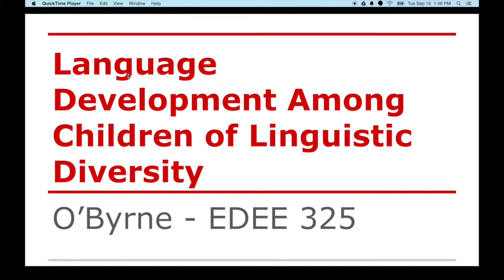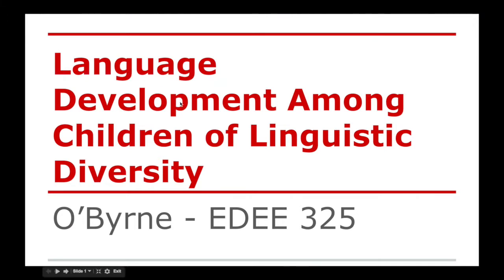Hello everybody, this is Ian O'Byrne again, taking a look at Chapter 3 in the Otto textbook. The nice thing about this chapter is that we think about all that we've learned about language development in Chapters 1 and 2, and some of the discussions we've had in class, and we think about what happens when we integrate diversity and culture into this discussion about language and language development.